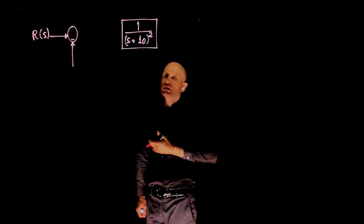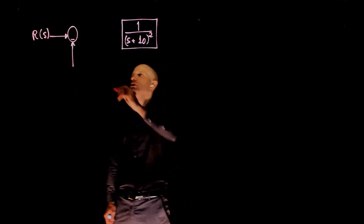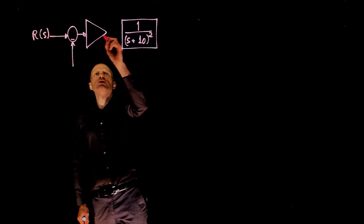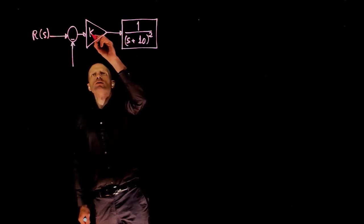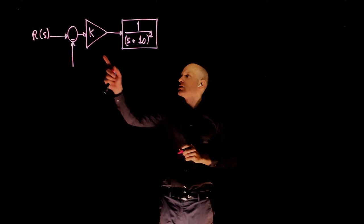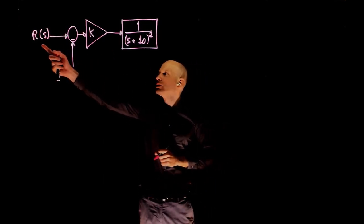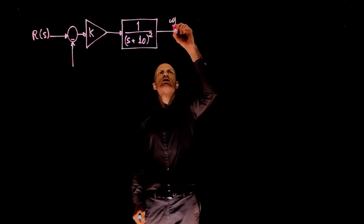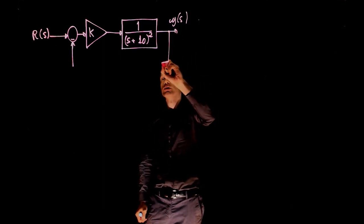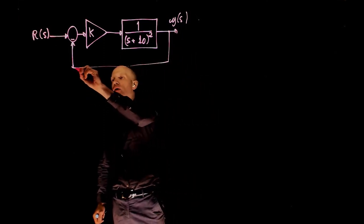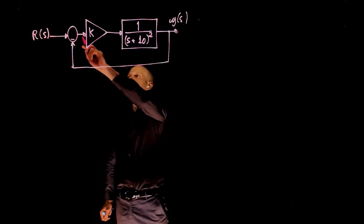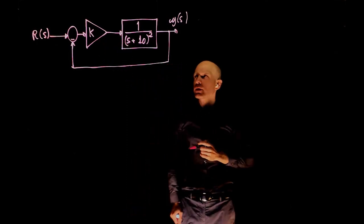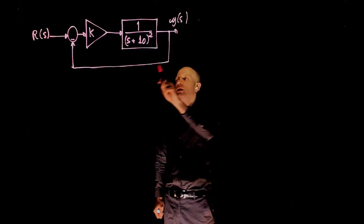Here we have r of s as our desired position, here we have the current position. The problem states that the controller uses a proportional controller, which means that the command we give to the plant is simply proportional to the error between the desired position and the current position. The current position here, let's call that y of s. We can now close the loop. We notice now that the error that we have here is multiplied by a constant k, and this becomes the input to the plant. The plant then will respond to that command and update the position.